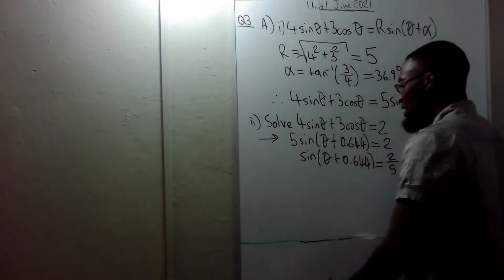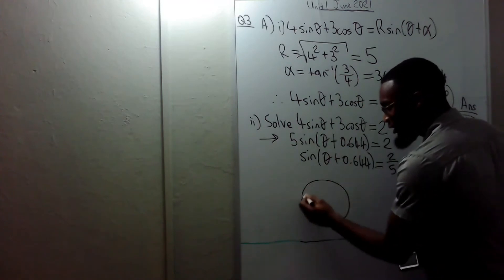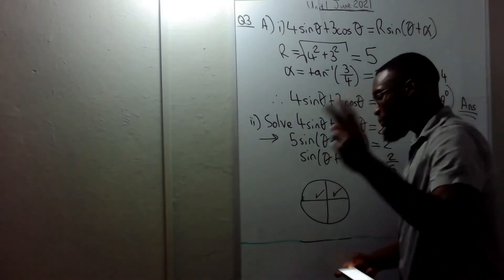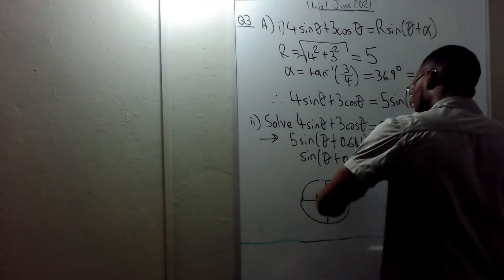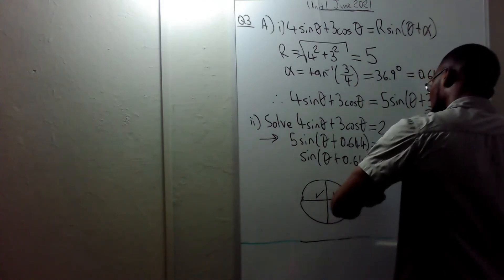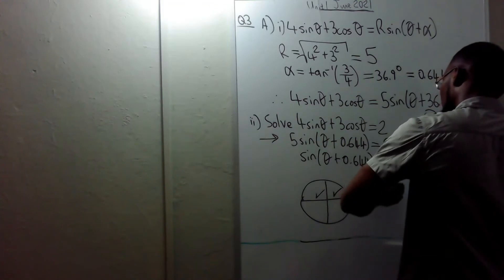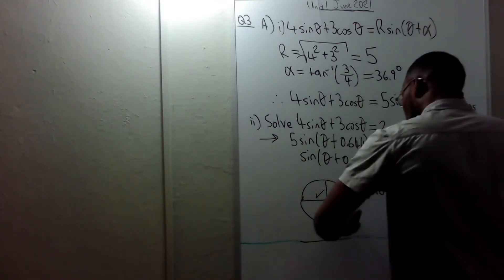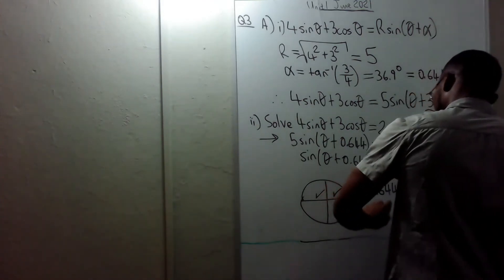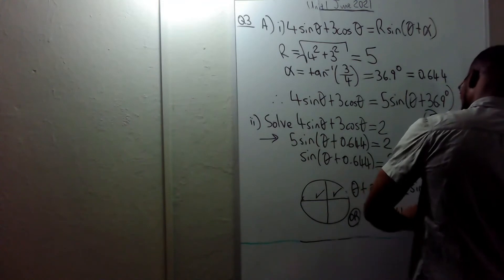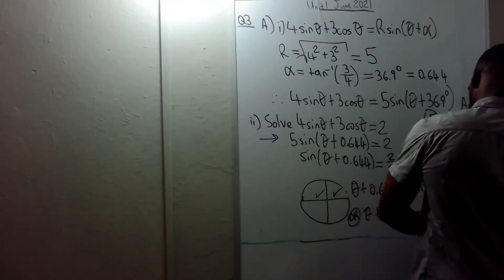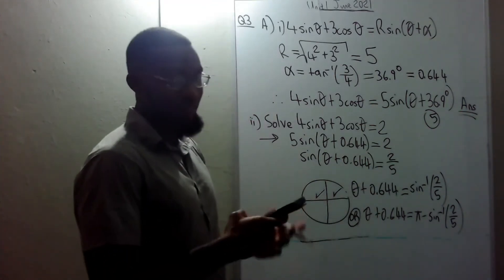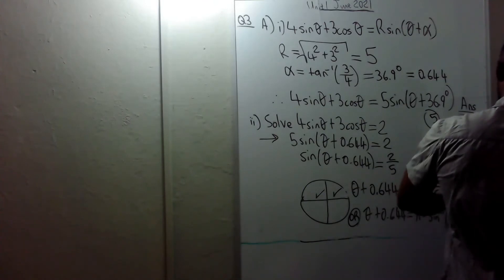Now take sin⁻¹, but first remember where sin is positive — in the first and second quadrants. So there are two possible answers: θ + 0.644 = sin⁻¹(2/5), or θ + 0.644 = π − sin⁻¹(2/5). sin⁻¹(2/5) = 0.412.